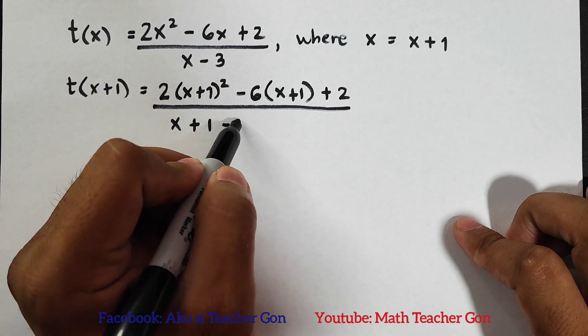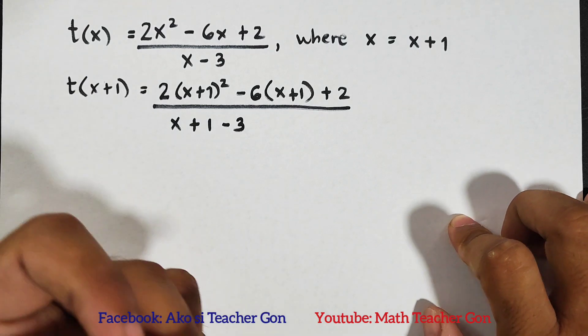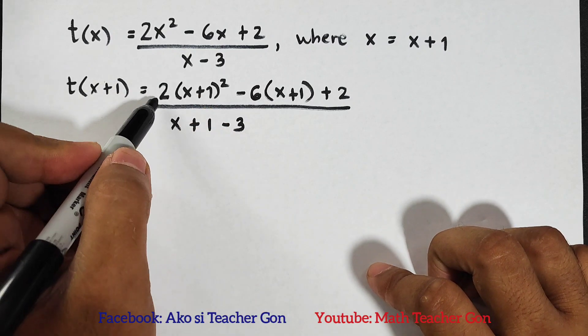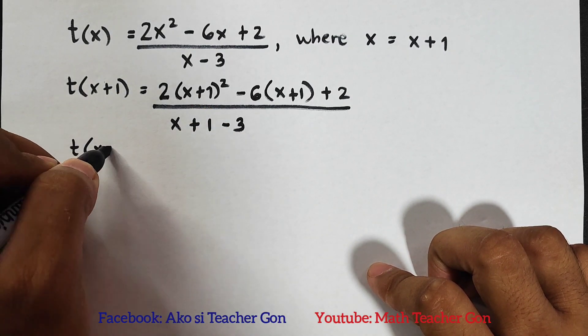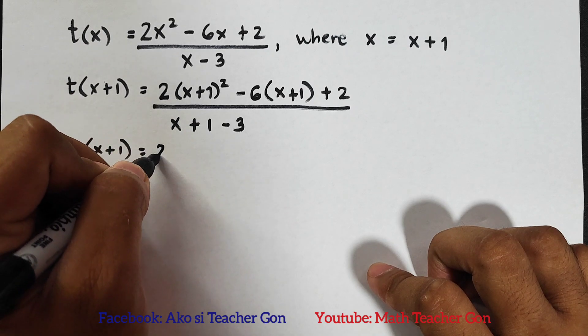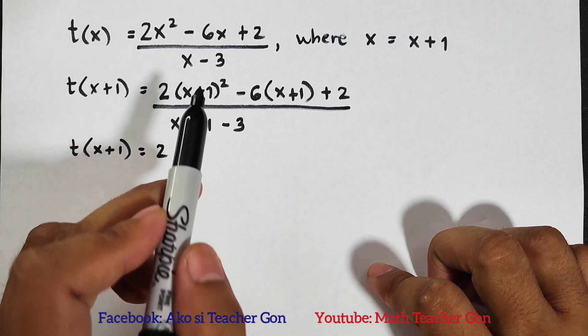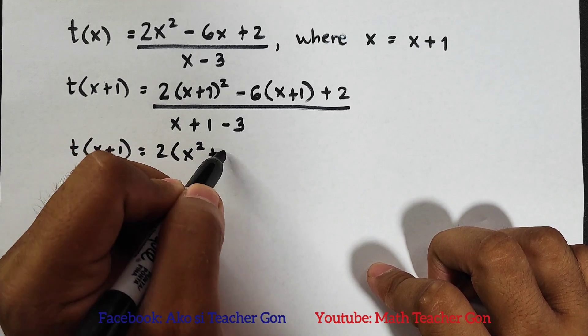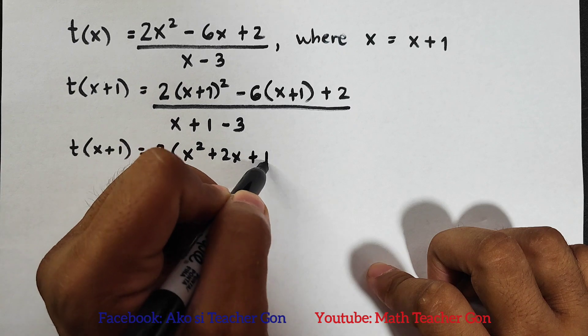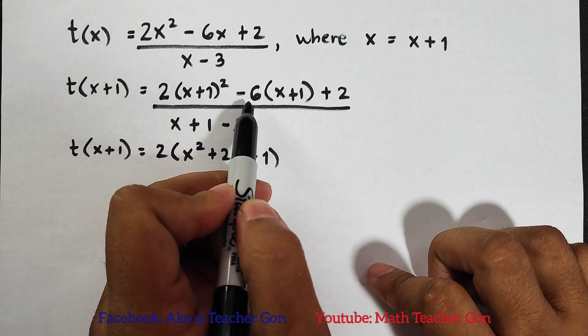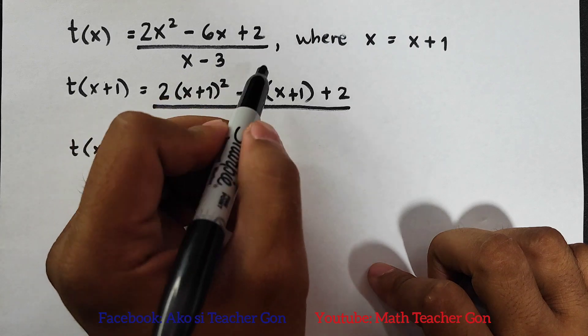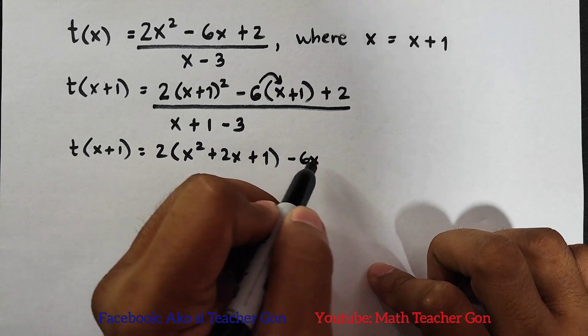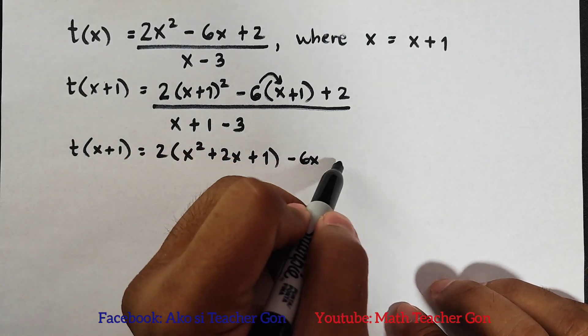Now, as a grade 11 student, you should know how to multiply or square binomials like this one. This is 2 times (x+1). When we square the binomial (x+1) squared, that would be x squared plus 2x plus one. For this part, negative 6 times (x+1), using distributive property: negative 6 times x is minus 6x, negative 6 times 1 is minus 6.